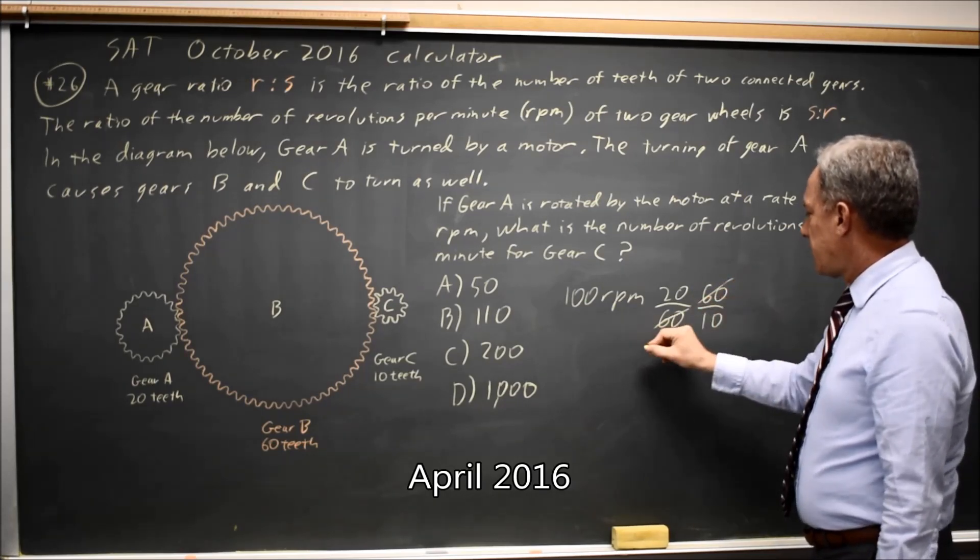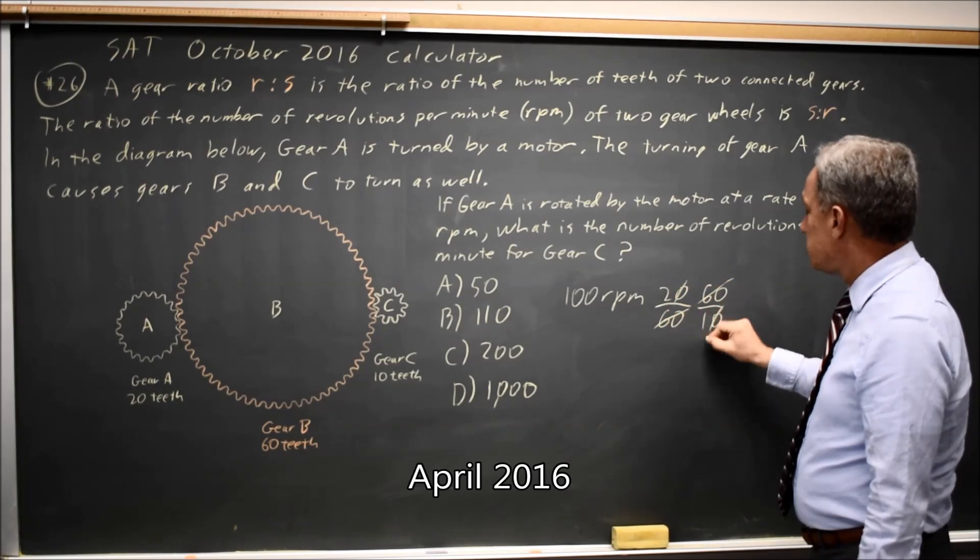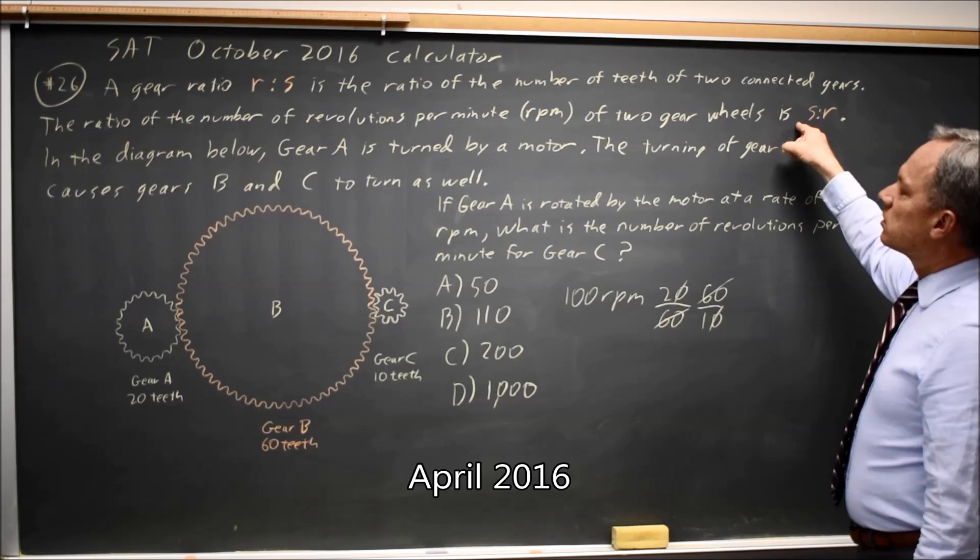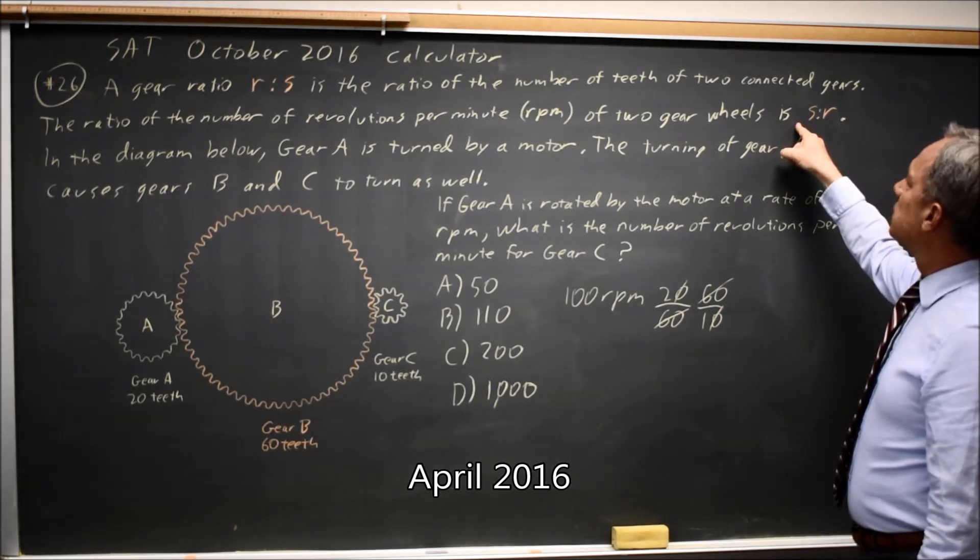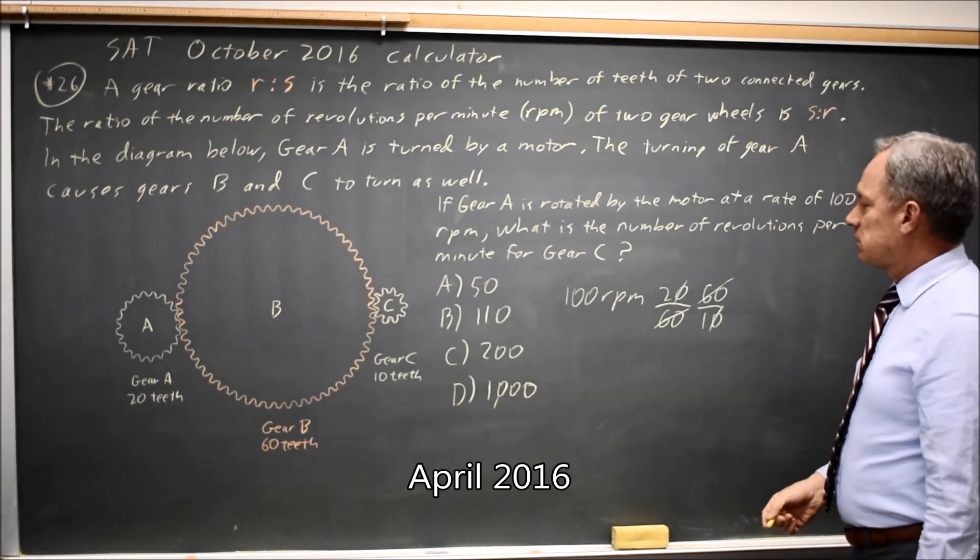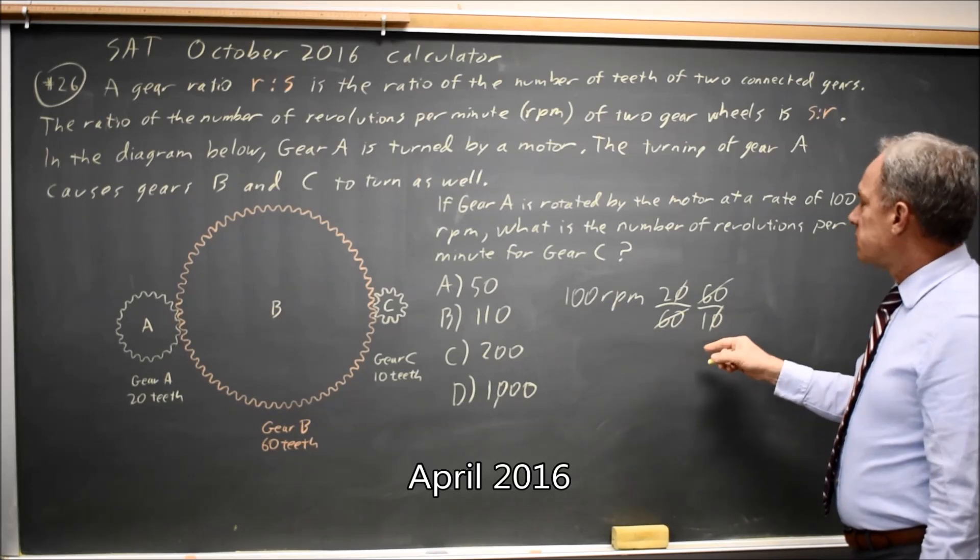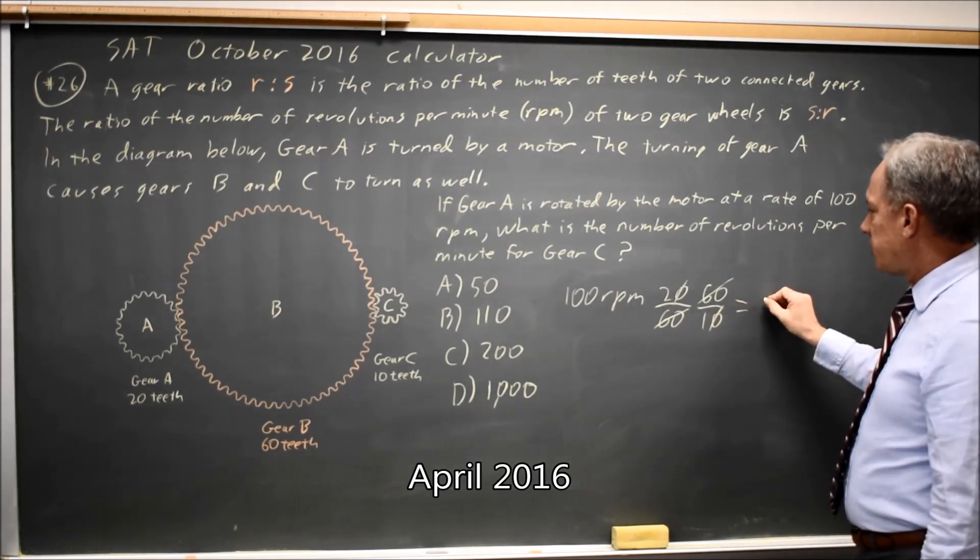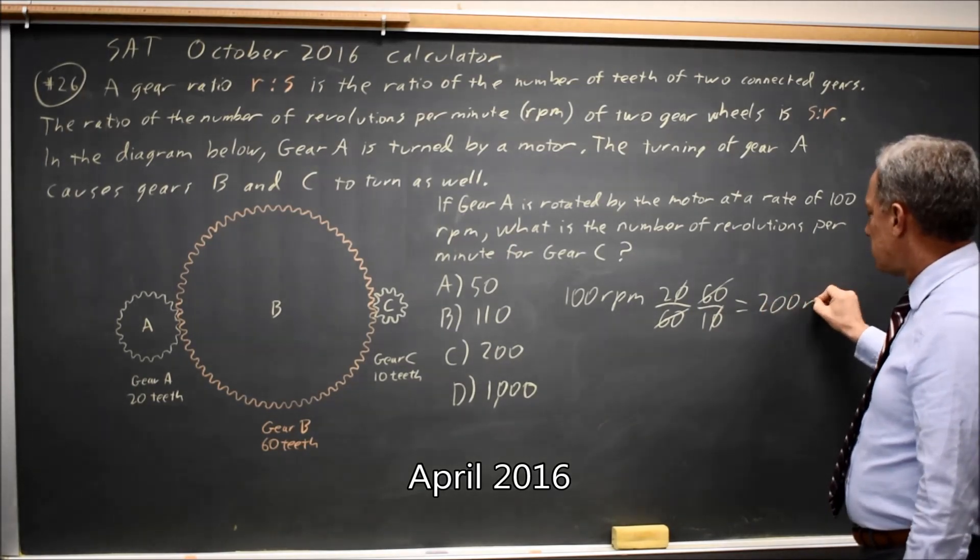The 60s cancel. 20 over 10 is the same as 2 over 1. So the gear ratio information, the ratio of RPM is S to R, which is the old gear to the new gear, tells us the rate is 200 RPM.